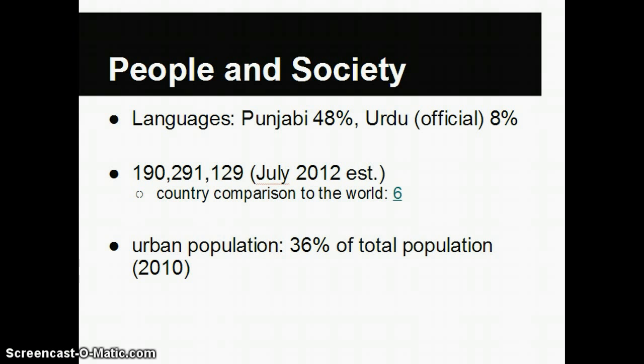As of July 2012, there are approximately 190 million people in Pakistan, which ranks them 6th in the world in terms of population. About 36% of that population lives in urban areas.